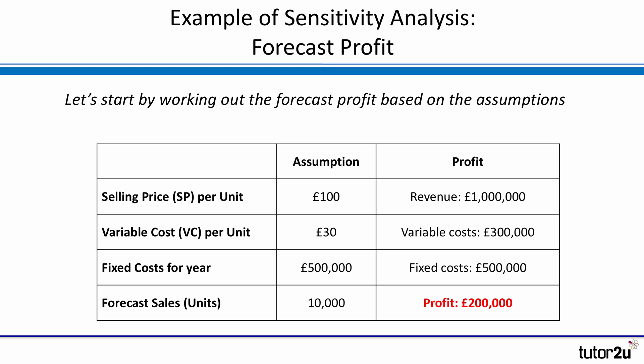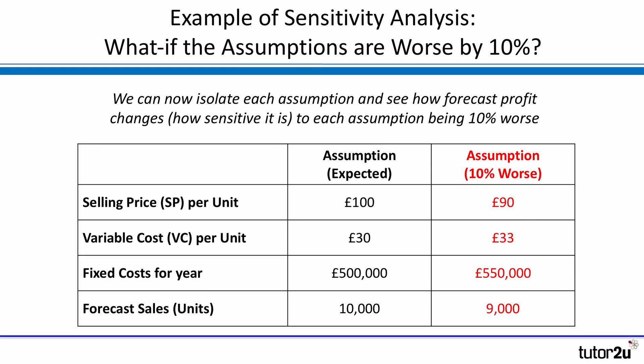But we've made some assumptions, so how sensitive is this forecast to those assumptions? What happens if we change them? We'll spend a minute looking at what happens if each assumption is 10% worse. So selling price per unit becomes £90, variable cost per unit becomes £33, fixed costs are higher than expected, and forecast sales are 10% lower — 9,000 units. Have a go at calculating the forecast profit by making each of those changes one at a time. For example, just changing the selling price from £100 to £90. Pause the video if you want to try it.